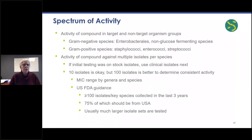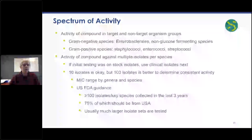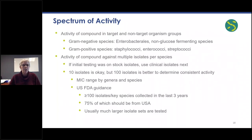Determine the spectrum of activity of your compound. You should look at both target and non-target organisms — gram-negative species as well as gram-positive species — and determine the activity of the compound against multiple isolates per species. If the initial testing was on stock isolates, it's important to use clinical isolates next. Ten isolates per species is okay, but 100 is better to determine the consistency of the activity.